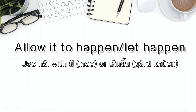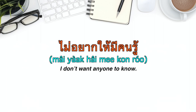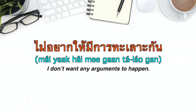ให้ can also be used to mean 'allow something to happen' or 'let something happen,' combined with มี or เกิดขึ้น. For example: ไม่อยากให้มีคนรู้ — 'I don't want anyone to know.' ไม่อยากให้มีการทะเลาะกัน — 'I don't want any arguments to happen.'